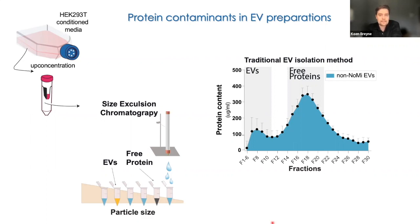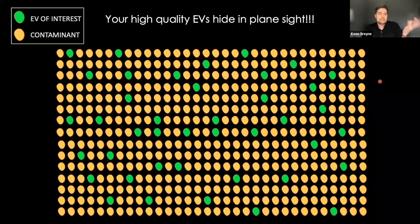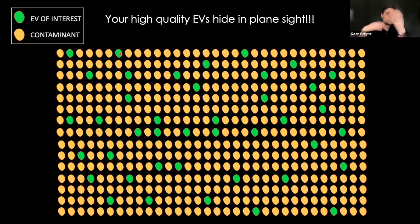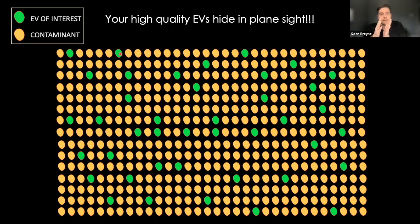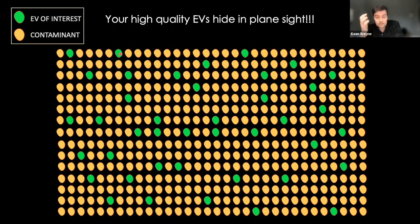To illustrate this schematically: imagine this is your starting solution. In green you see EVs of interest, and in yellow you see your contaminants. There's much more yellow because there are far more contaminants in your solution than EVs of interest. These contaminants don't need to be proteins — they can be RNA, DNA, et cetera, depending on what you're looking for in your EVs. Contaminants can also be other EVs that don't carry the cargo you wish to study.